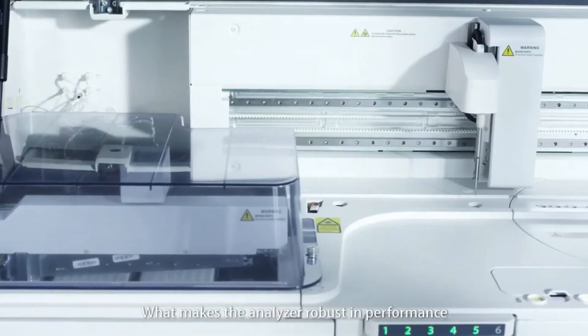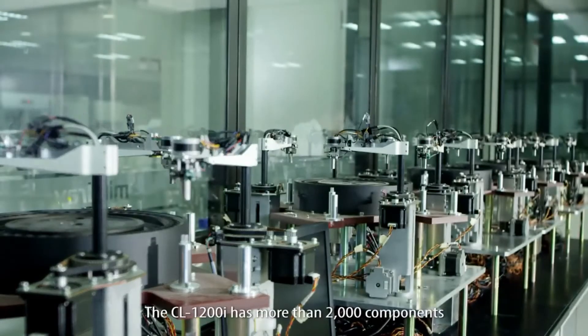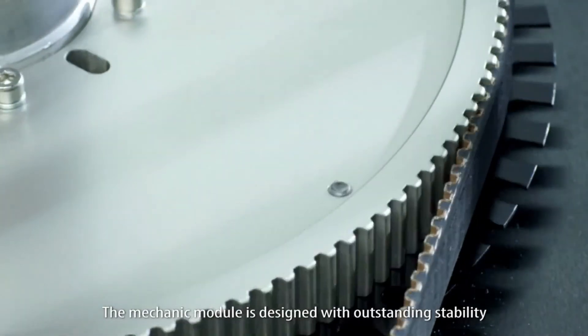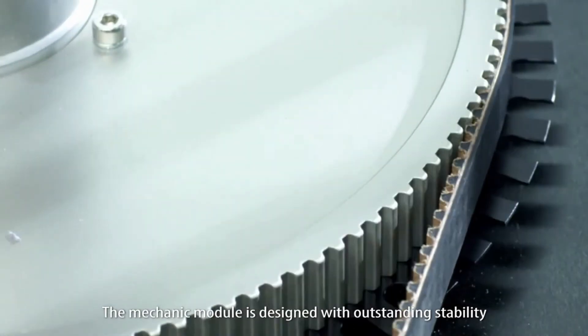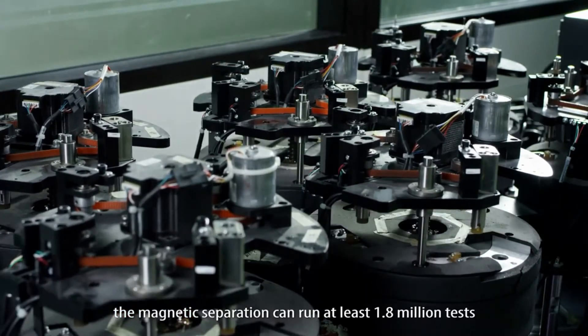What makes the analyzer robust in performance? The CL1200i has more than 2,000 components. The mechanic module is designed with outstanding stability. For example, the magnetic separation can run at least 1.8 million tests.